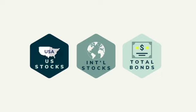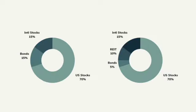The three-fund portfolio consists of three funds that focus on U.S. stocks, international stocks, and total bonds. Stocks have the highest potential for rewards while bonds provide steady income growth. Depending on your goals, risk tolerance, and other factors, you can adjust the weights of these asset classes — this is where the concept of asset allocation comes into play.